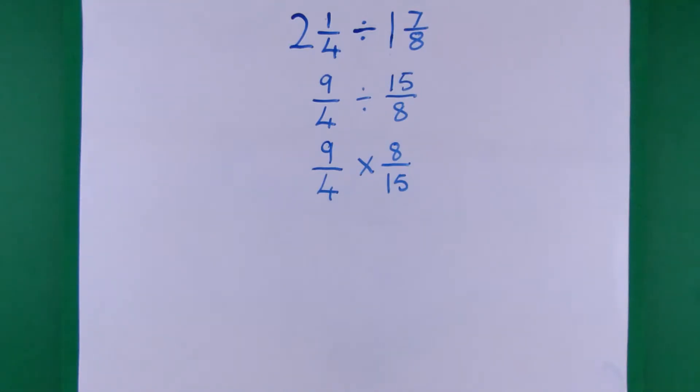Now could you do any cancelling? Press pause and do any cancelling you can find. The 4 and the 8 both divide by 4. So 4 divided by 4 gives you 1 and 8 divided by 4 gives you 2. The other 2 work as well. They both divide by 3. So there's 3 3's in 9 and there's 5 3's in 15.